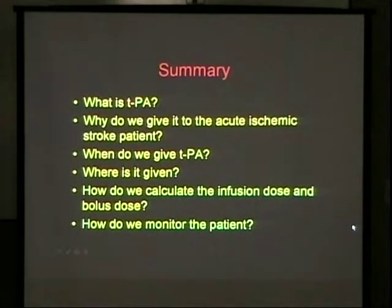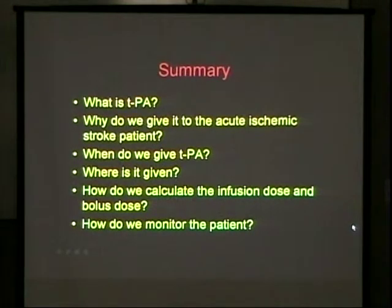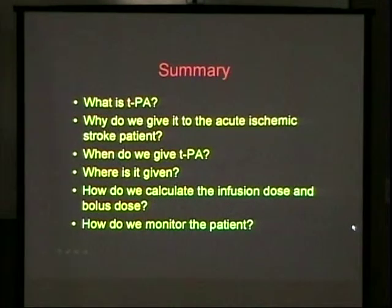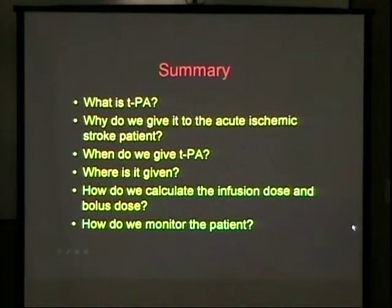In summary: what is TPA? A clot buster. Why do we give it to the ischemic stroke patient? To open that vessel up and re-perfuse the brain. What's our window of opportunity? Three hours. And door to drug? 60 minutes. What departments can give it in this hospital? The ED and ICU.